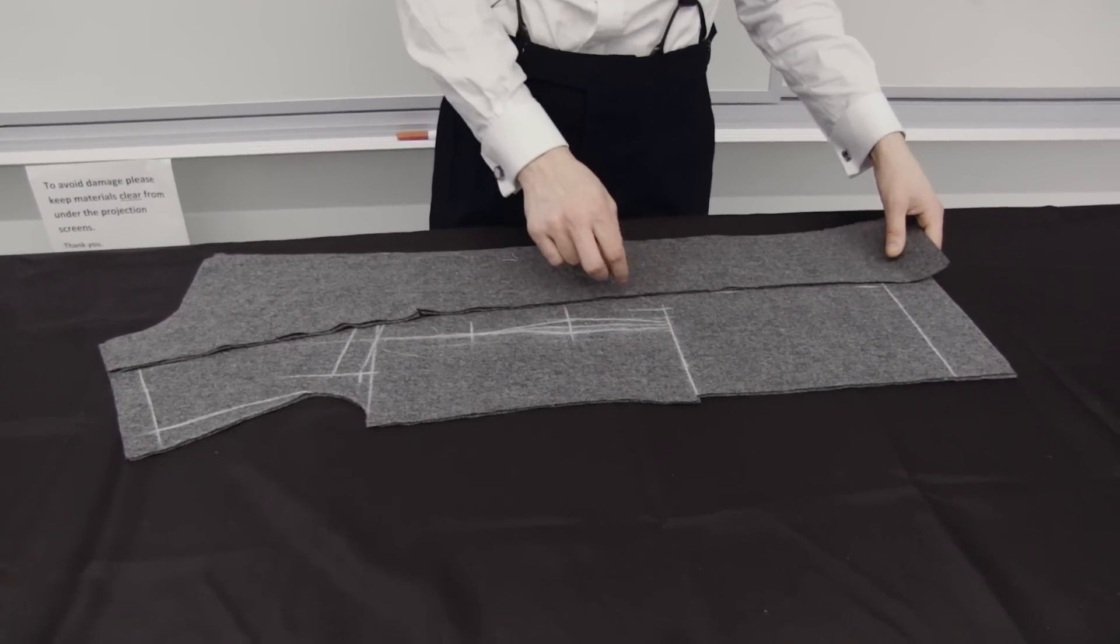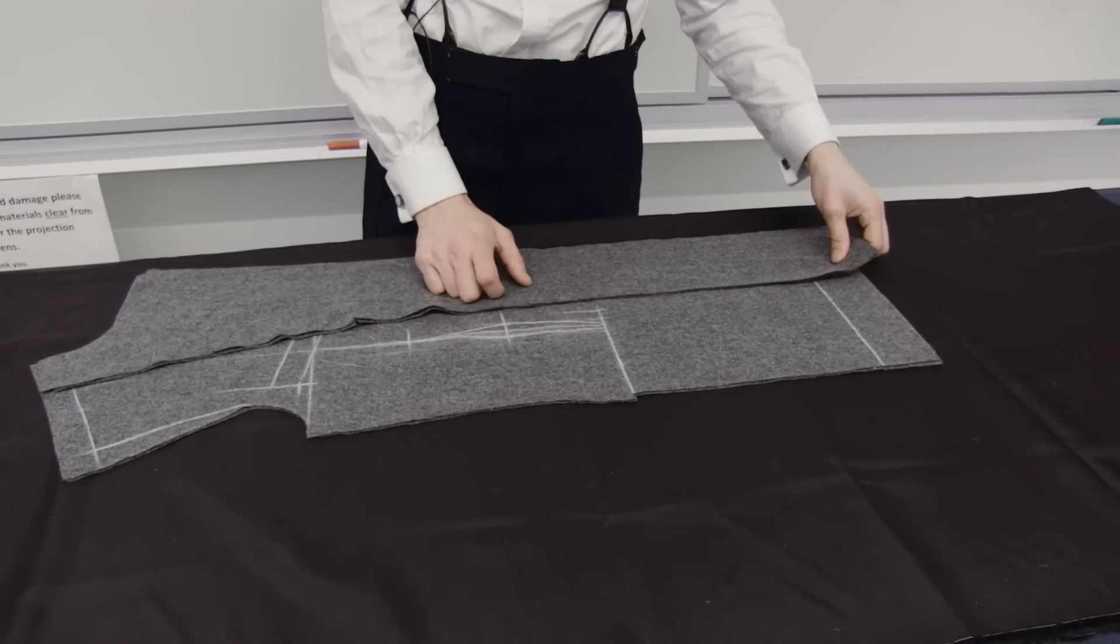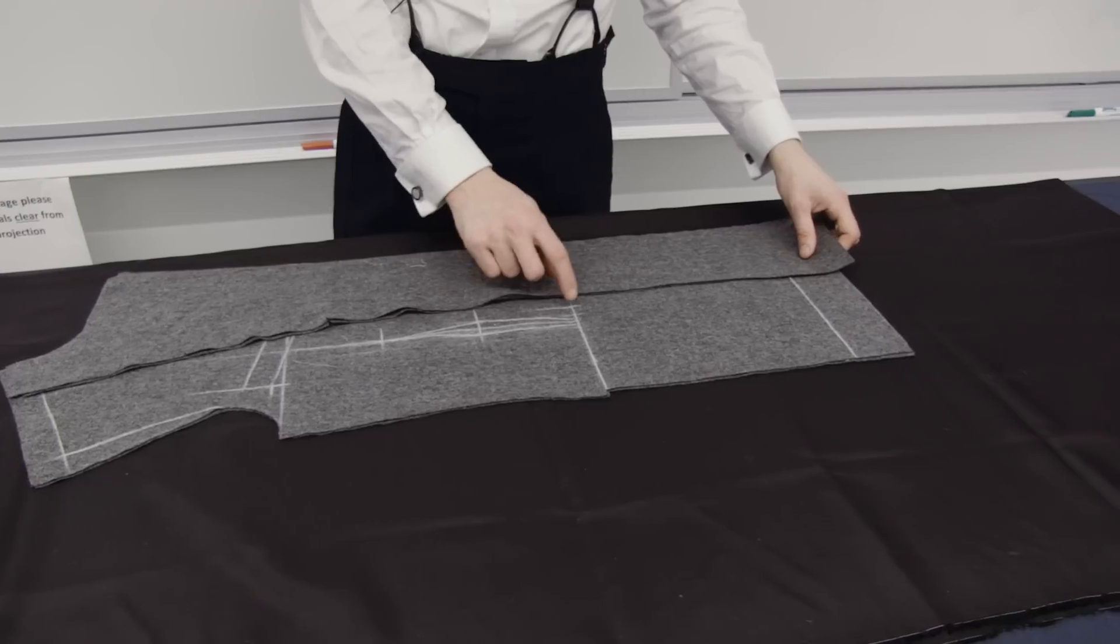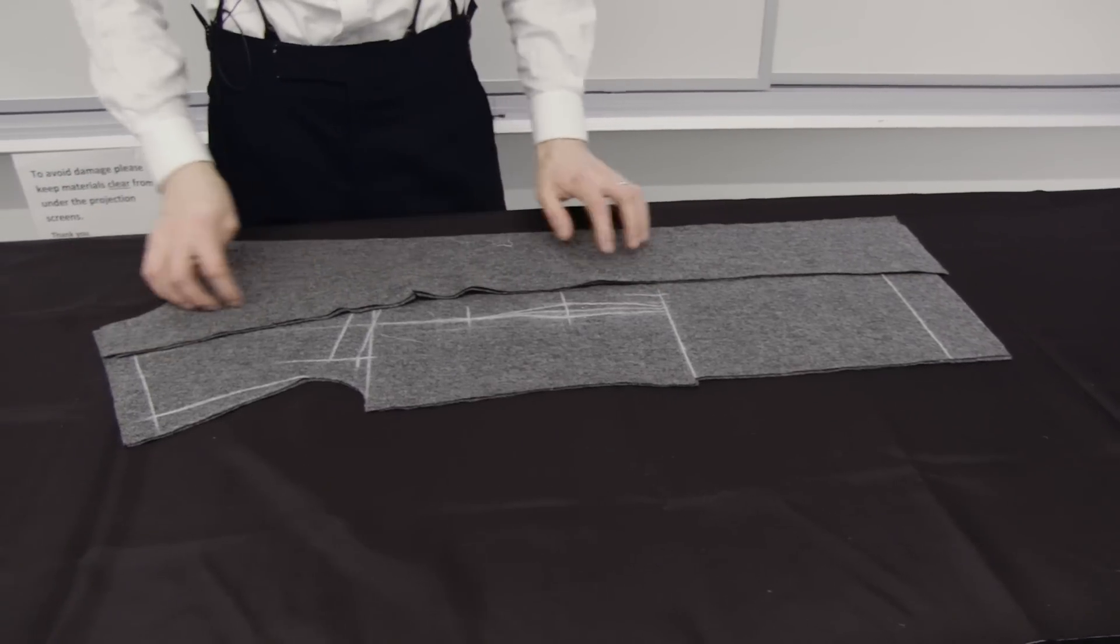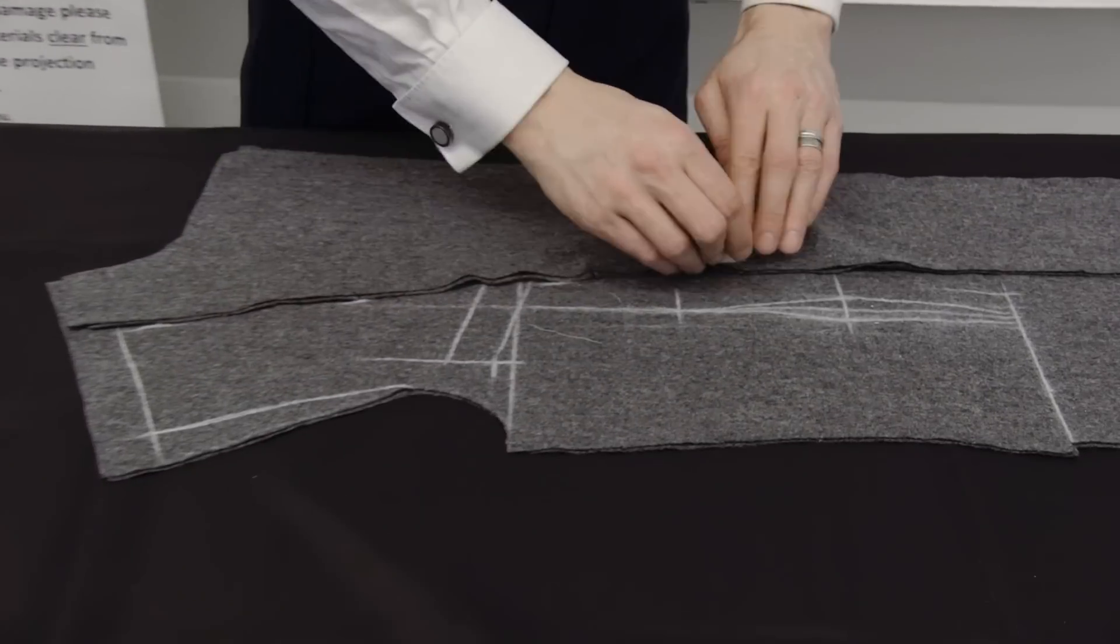We come down to the pocket position. We want the facing to finish about three quarters of an inch forward of our pocket position, just right about there. And then we have a little bit of fullness here for the chest. So we mark the facing off onto the forepart like so.